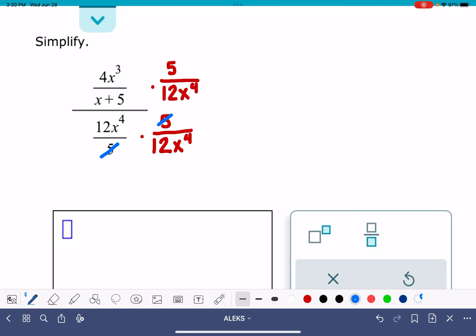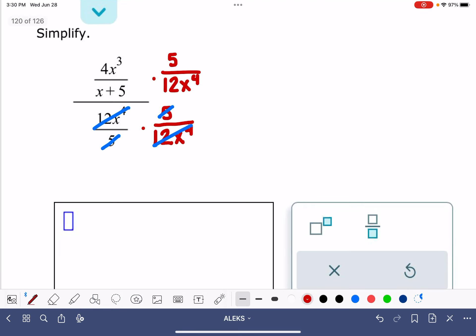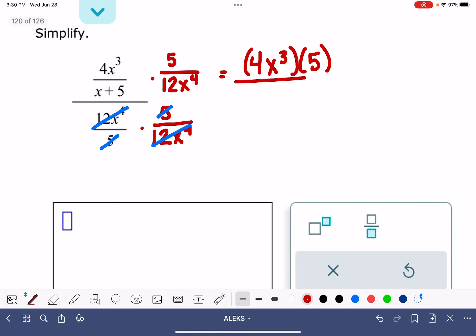That's going to let me cancel out the denominator, and that's going to leave me with a numerator of 4x cubed times 5, because I'm just multiplying straight across the numerator of both, and then my denominator is x plus 5 times 12x to the 4th.